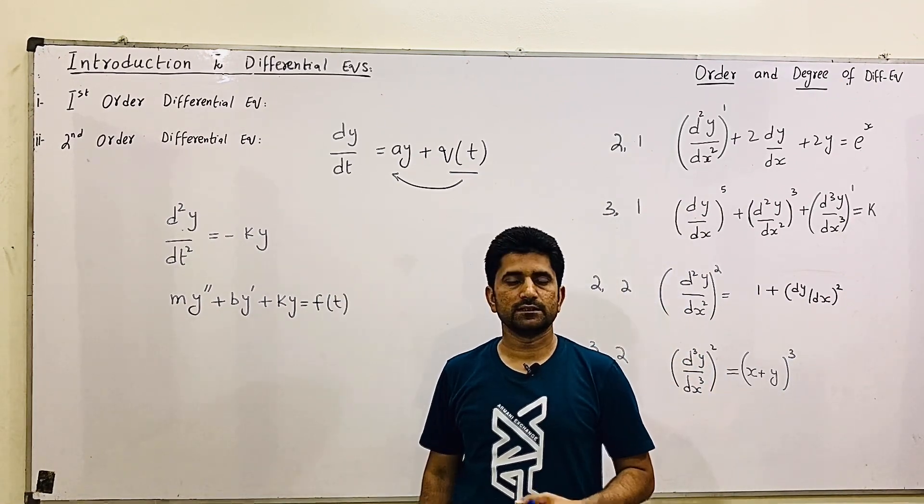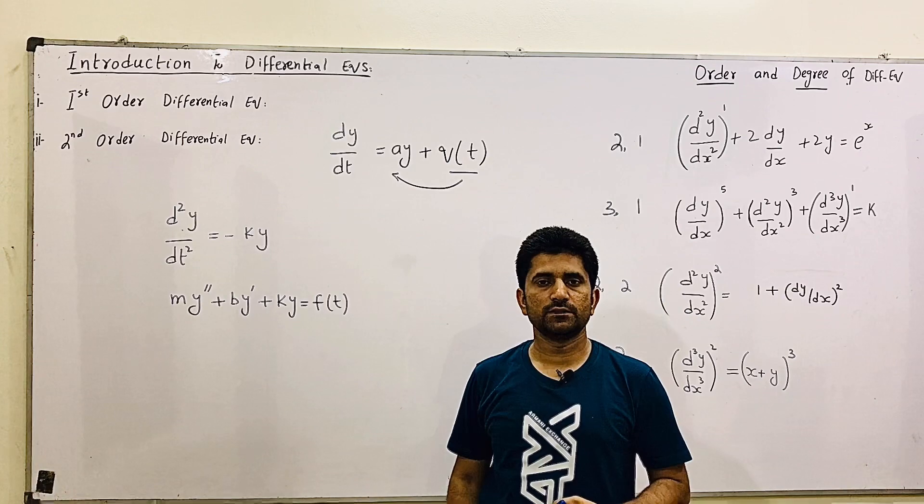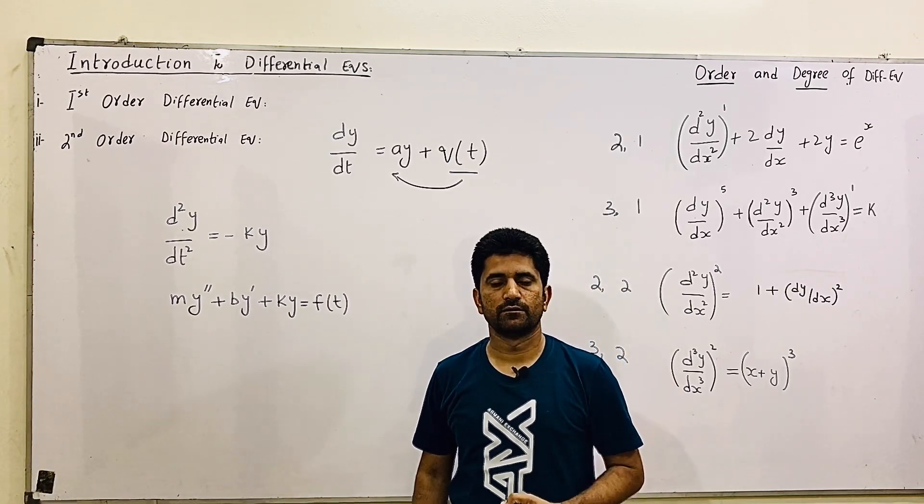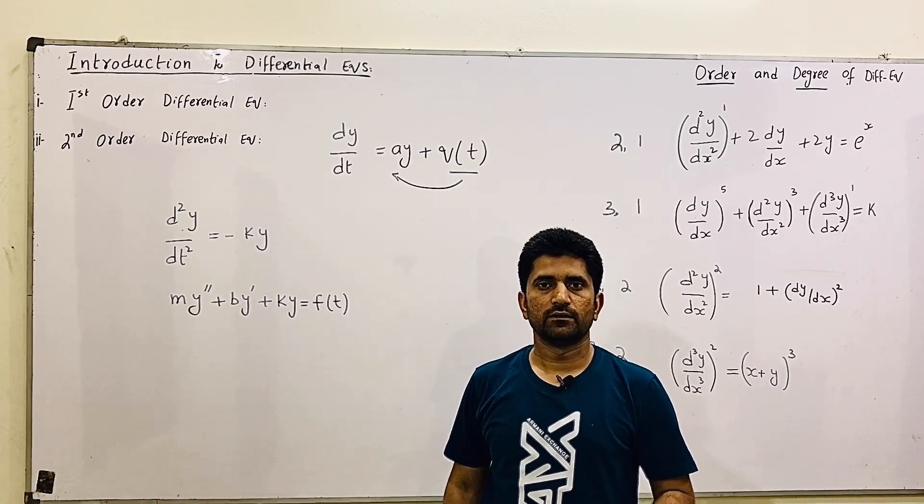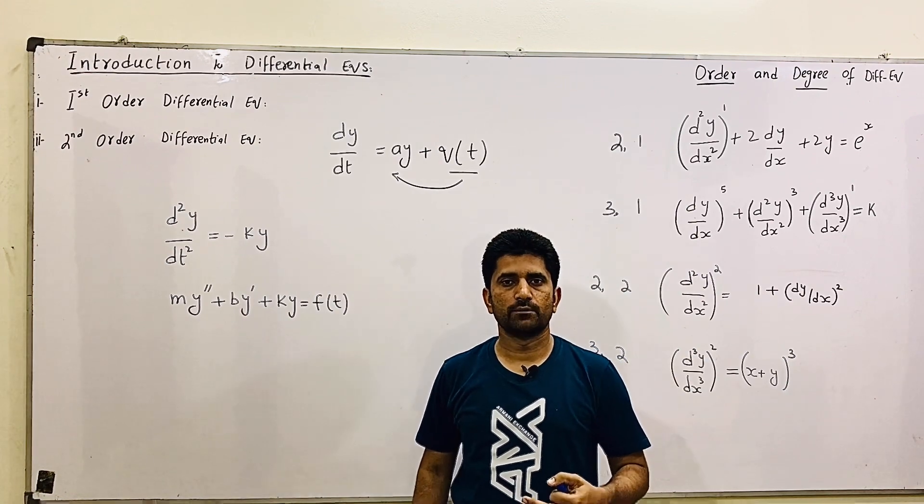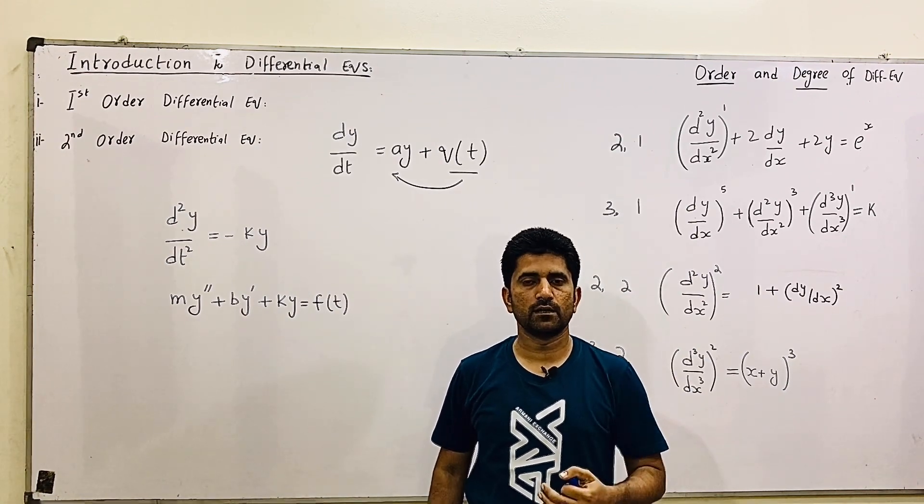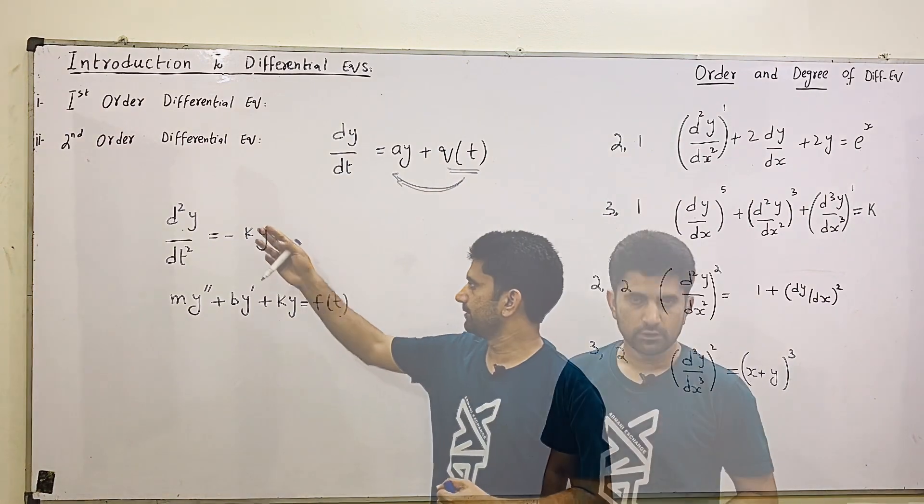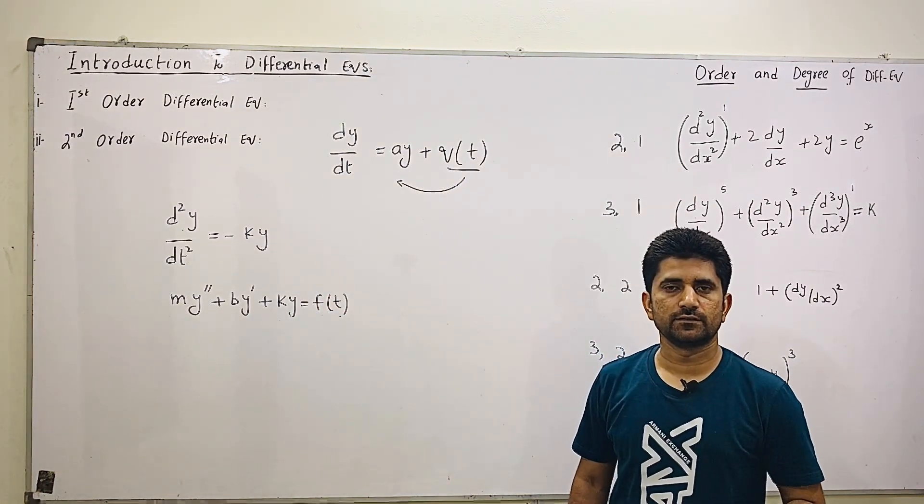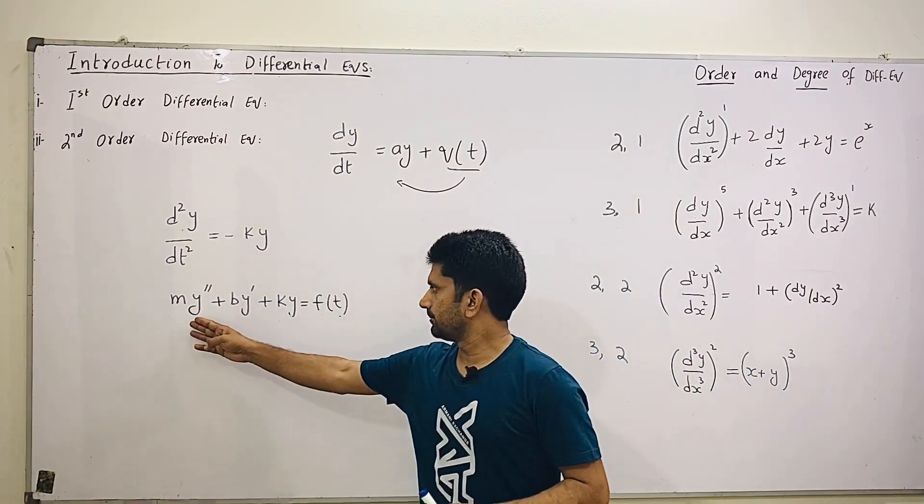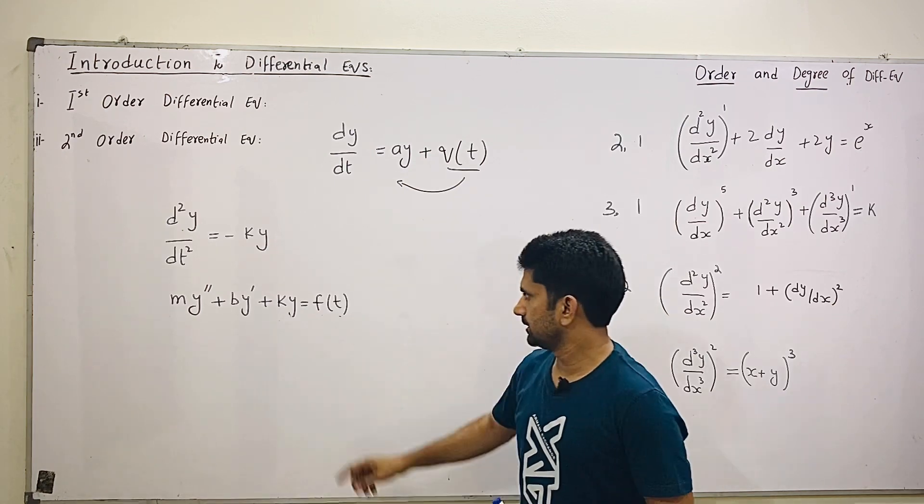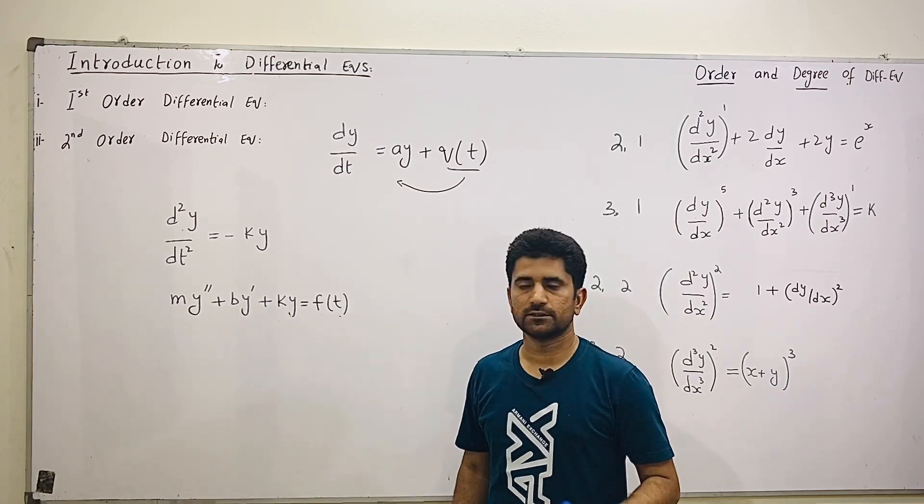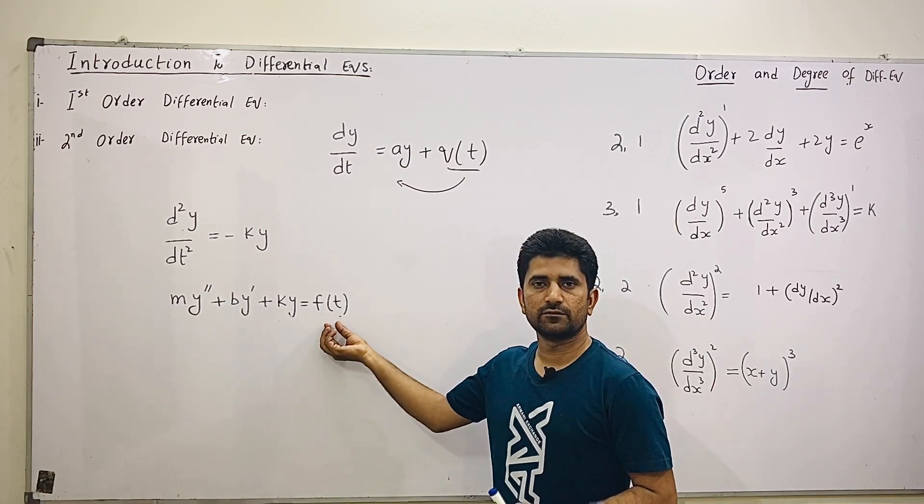Second derivative is the acceleration. It tells you about bending of the curve. If we have a graph the first derivative tells about maxima or minima of the point, the second derivative. So Newton's law, the physics we all live. Mass times acceleration. K is the force term. And this is the external force.